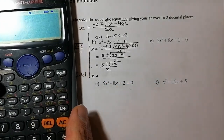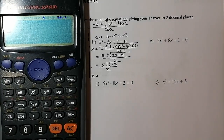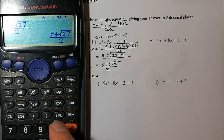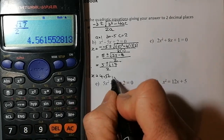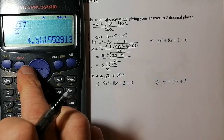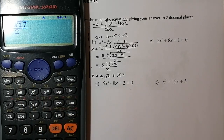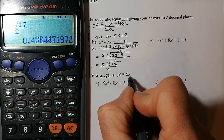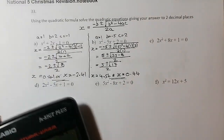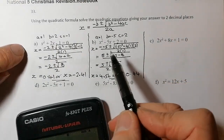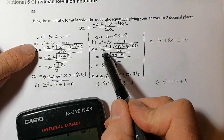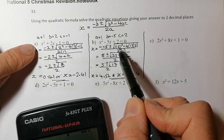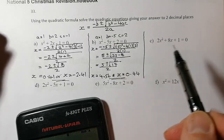Into the calculator: fraction button, 5 plus root 17 on top, 2 on the bottom, press equals. Rounding to two decimal places gives 4.56. Using the cursor to change plus to minus gives 0.44. The key thing to be careful of: the negative b with b being negative 5 makes a positive, and negative 5 squared gives positive 25, not negative 25.